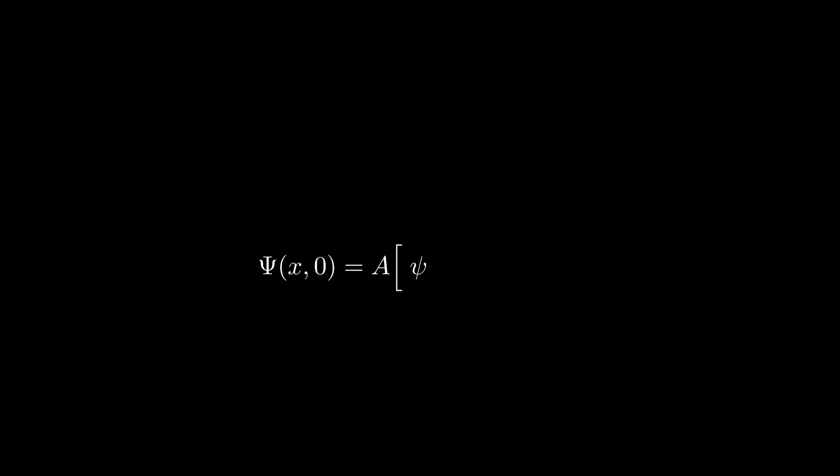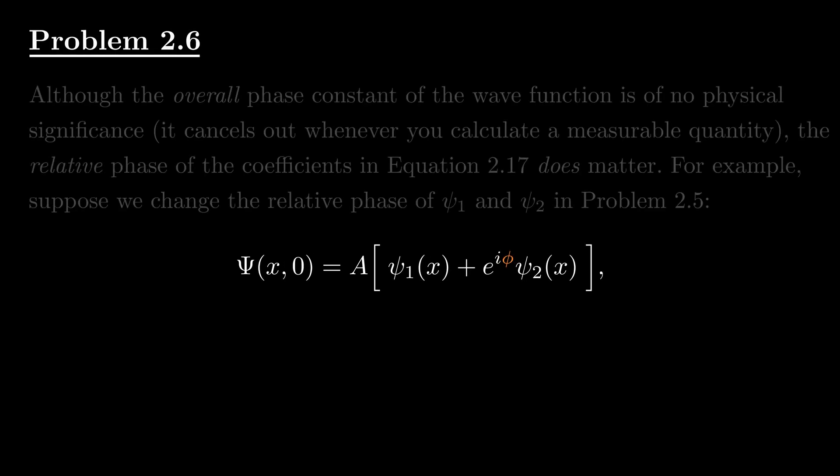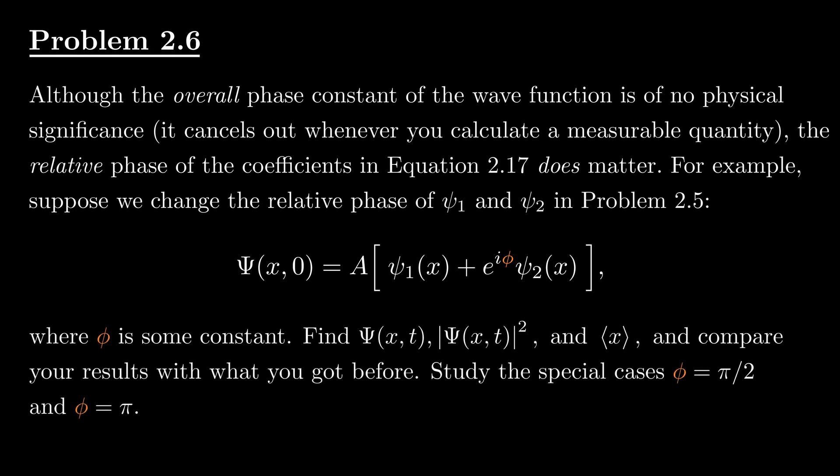Last time we explored problem 2.5 and saw how a superposition of energy eigenstates evolves over time. But now we're adding a new twist: what happens when we introduce a phase shift between the two states? This phase factor, phi, may seem like a small change, but it has real physical consequences.